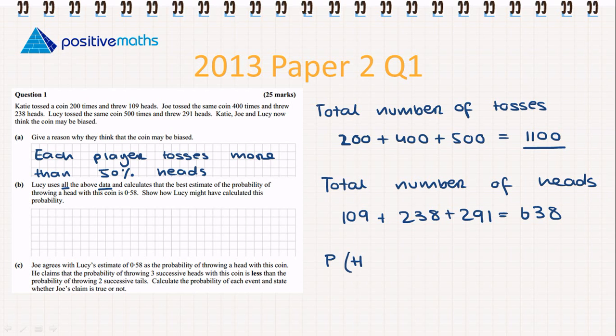The probability of tossing a head for this coin equals the number of times they tossed a head over the total number of times. We get 0.58. This is how we show how Lucy calculated the probability. We'll write our answer: the probability of tossing a head is 0.58.